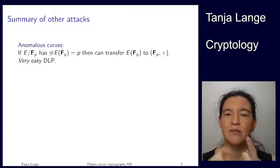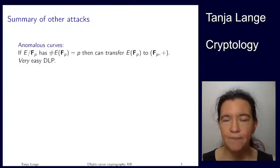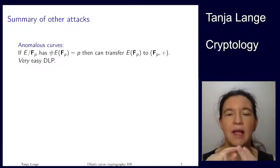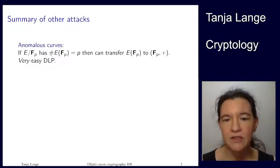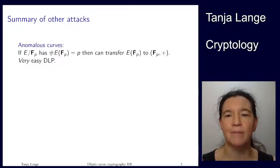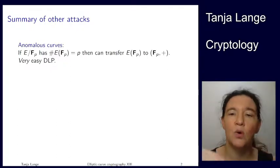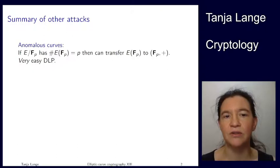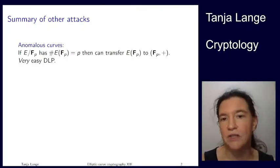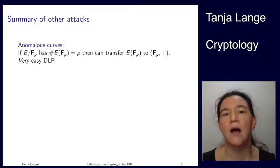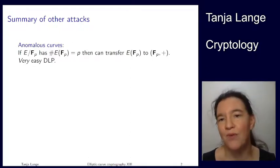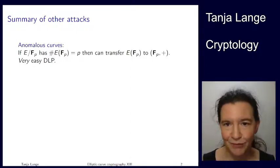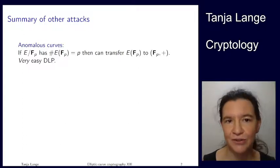What we had before is it maps to an extension field Fp^k and it's at least the multiplicative group there, and there we have an index calculus attack. Or if you're a constructive person, you can balance the sizes. Here there's no escape. If you happen to fall onto an anomalous curve, you're doomed. This is just bad. There's no silver lining. There's no nice thing you can build from this unless your target is building a weak system or doing a capture the flag exercise. That's basically the best thing you can do with an anomalous curve.